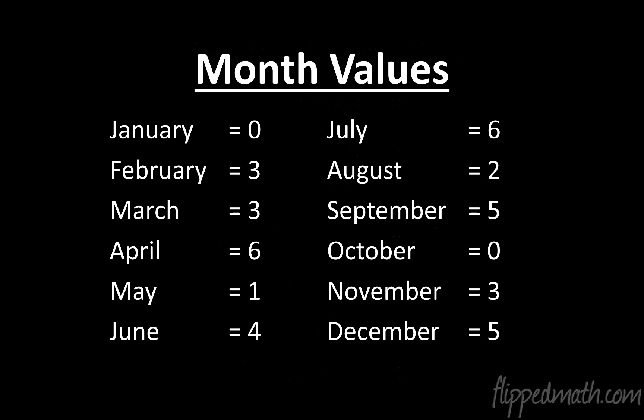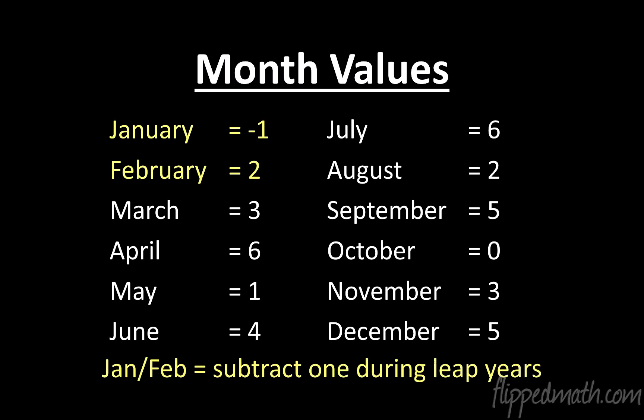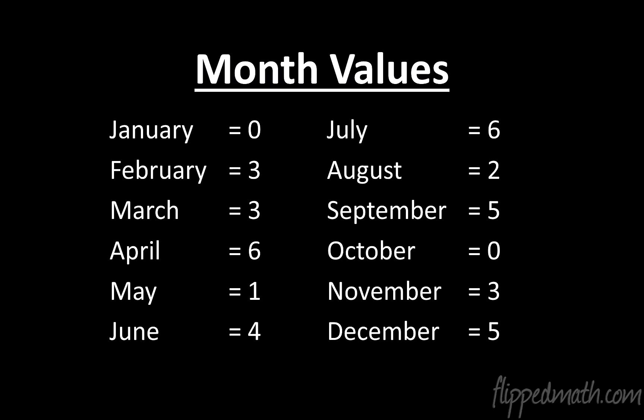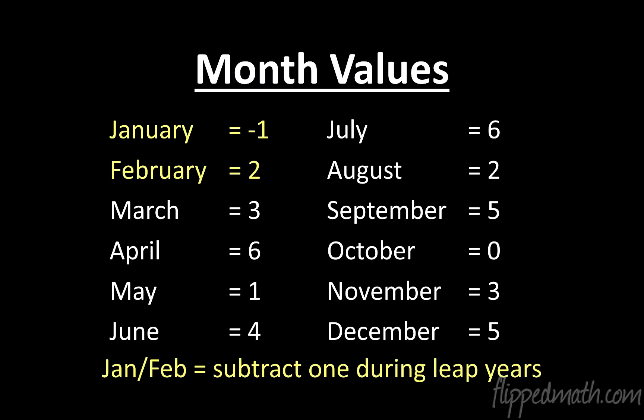First off, the month values. Every month has a special value. Don't stress about memorizing these yet — I'm going to give you some hints to help you memorize them. One important thing: notice the first two months. If it is a leap year, we have to subtract one from January and February. So the normal value for January is zero, February is three. But if it's a leap year, January is negative one and February is two. You have to know whether you're dealing with a leap year to do this correctly.